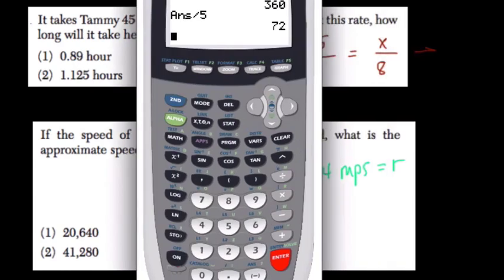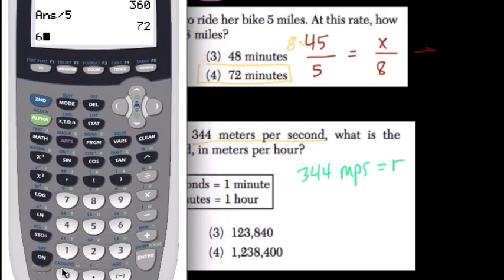Well, how many seconds are in an hour? There's 60 seconds in a minute and 60 minutes in an hour, so there's 3600 seconds for every hour.